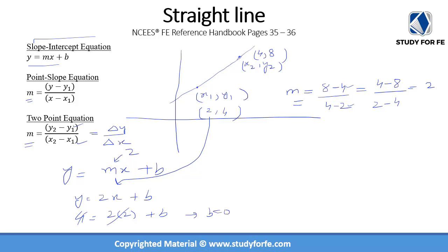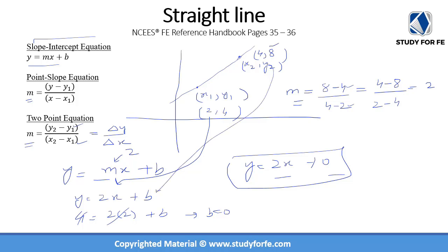So the equation is y = 2x + 0. The intercept being 0 is a coincidence — it could have been anything. The process remains the same: calculate the slope, then substitute either of the two given points into the equation to find b. The end goal is always to convert the equation into standard form y = mx + b so you can clearly identify the slope and the intercept.